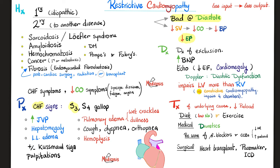Don't forget: any time there is fibrosis in the heart, arrhythmias can develop, leading to palpitations. That is why pacemakers and ICDs may be needed.